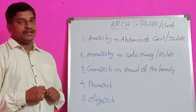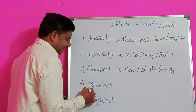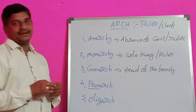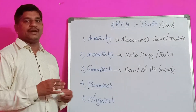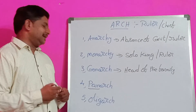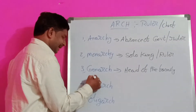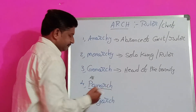Panarch. Nowadays we are using the root word 'Pan' — for example, Pandemic. Pan means all. Here 'Pan' means all and 'arch' means ruler.